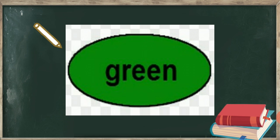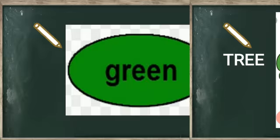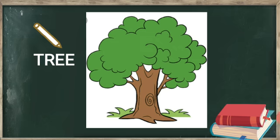This is green color. Yeh kaun sa color hai? Green color. Again you will speak with me — this is green color. You all know this picture — yeh kya hai? This is a tree. Aap tree ke paas do color hotay hain: upper part green color ka hota hai aur below part brown color ka hota hai. Upper part green hota hai because there are many small leaves and leaves ka color bhi green hota hai. So the upper part of the tree is green.